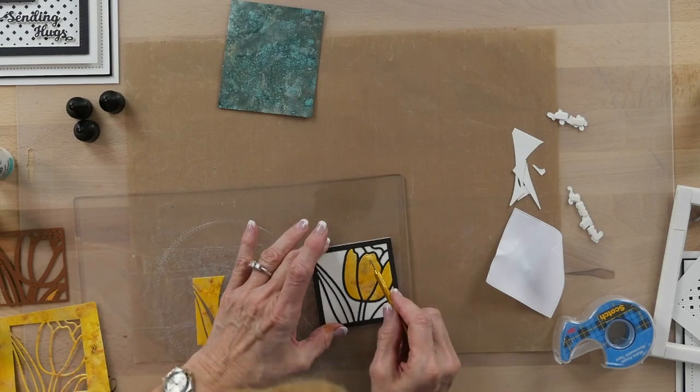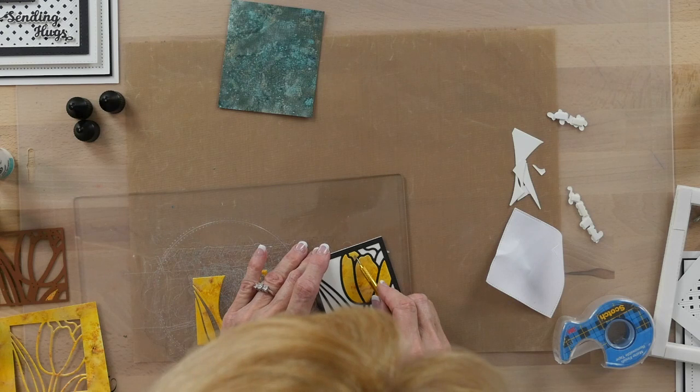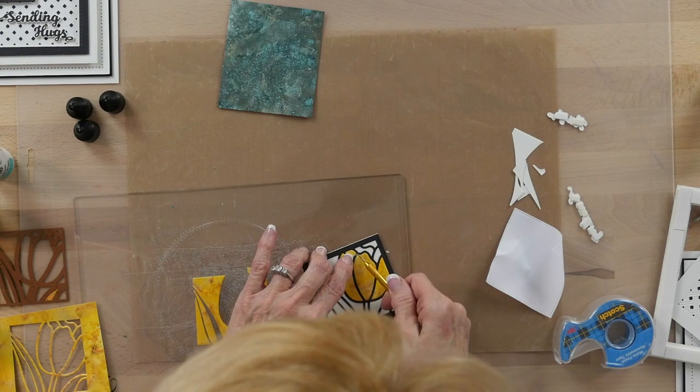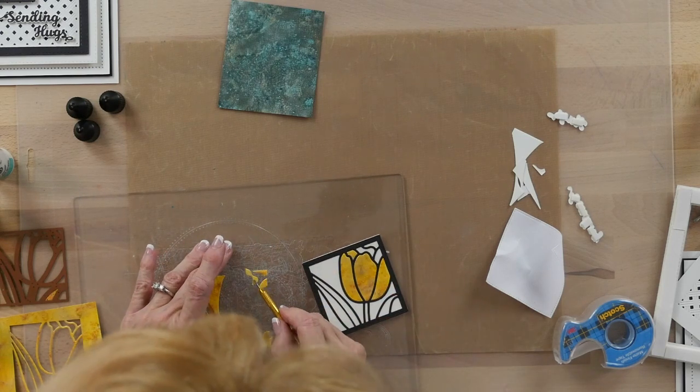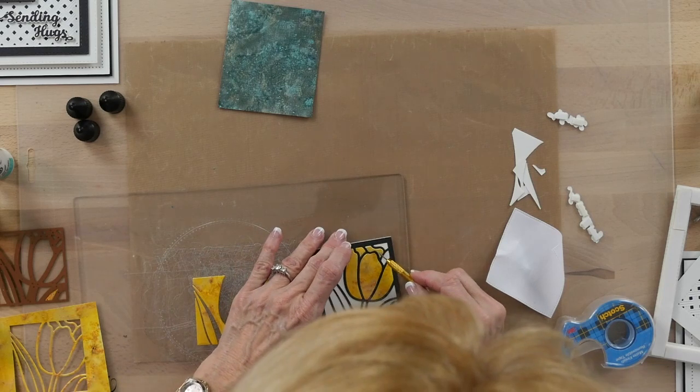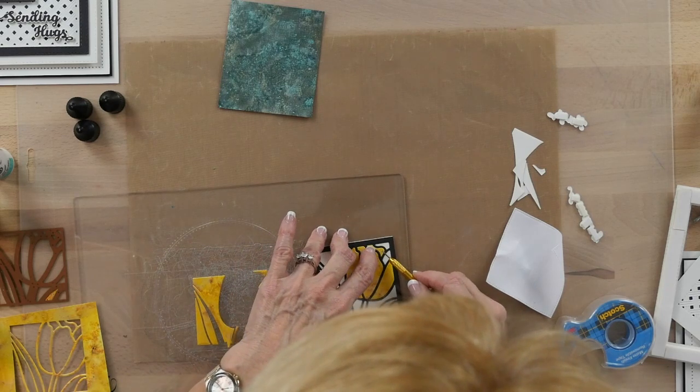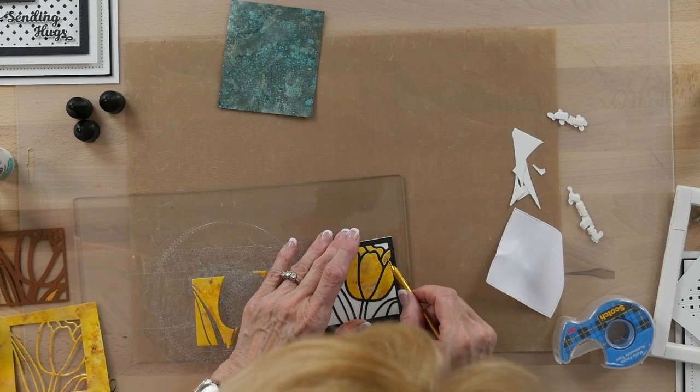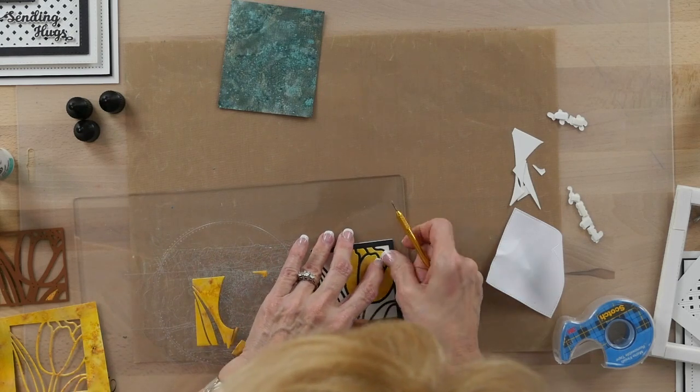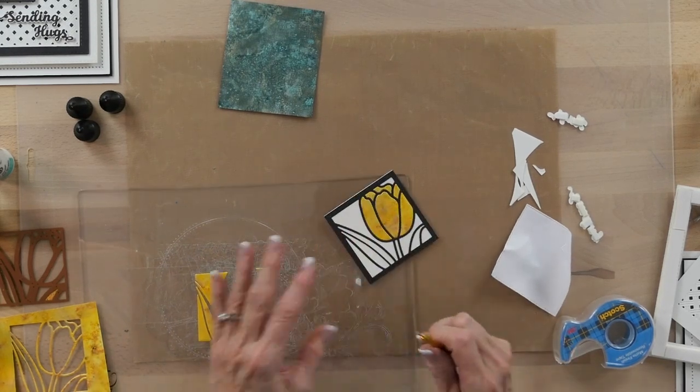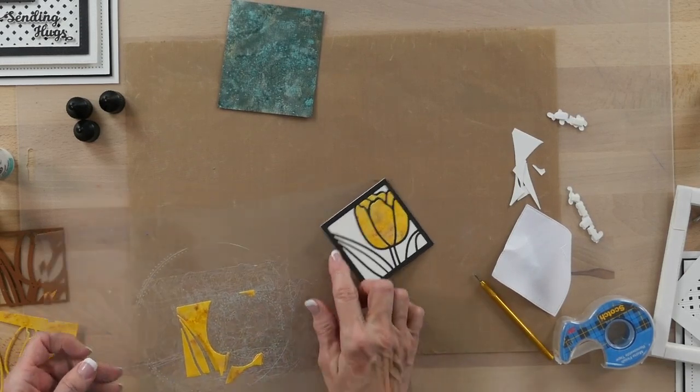I've got a little piece here, so I'm going to use the pokey tool. I've put a little bit of a glue dot on there just to help pick that up. That one into place, and this piece. Now my tulip is all in place.